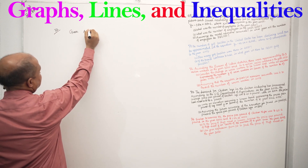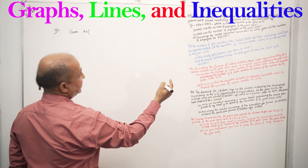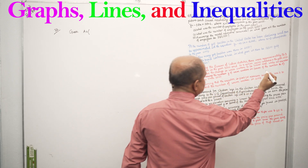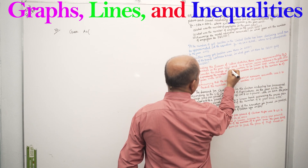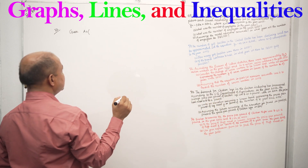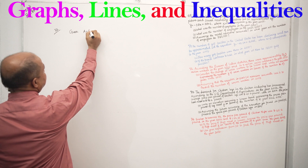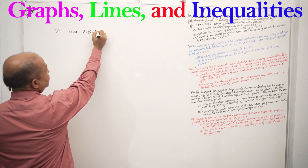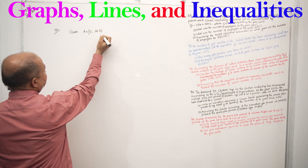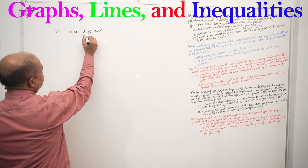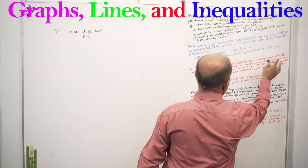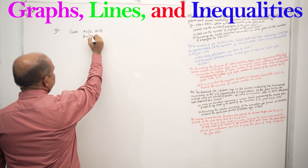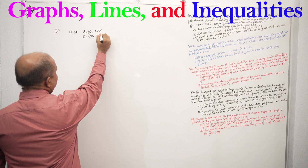Given: in the year 2000, X equals 0 and Y equals 16.3 million. In 2010, X equals 10 and Y equals 14.9 million. We have two data points to work with.